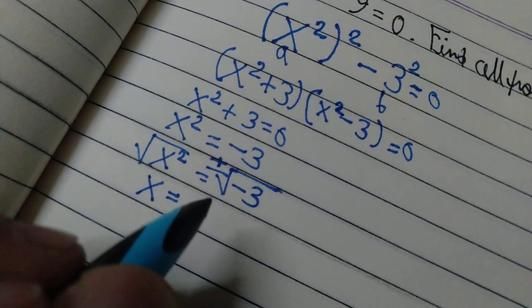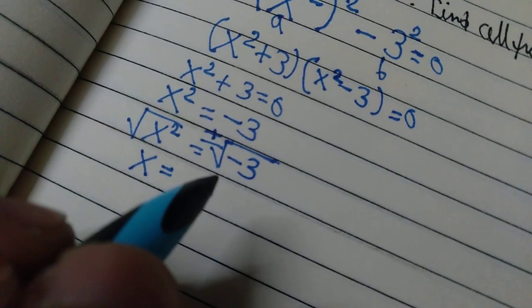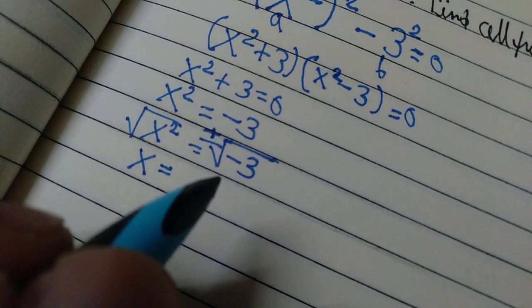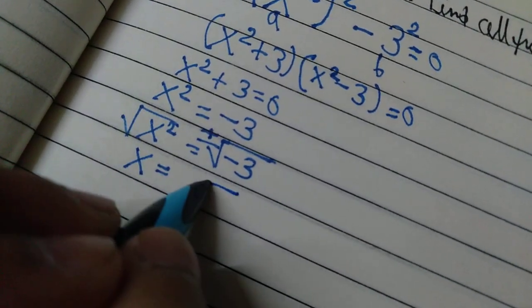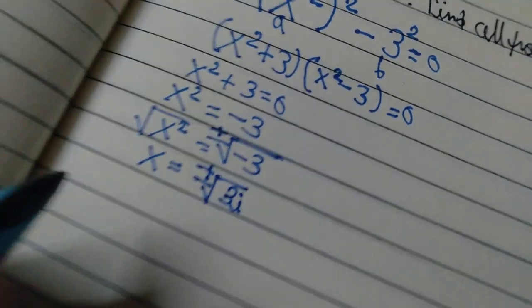can be written as under root 3 times negative 1, and the root of negative 1 is i. So root of negative 3 becomes root 3 i. So x equals plus minus root 3 i, and these are our first two imaginary solutions. Now let us take a look at the real ones.